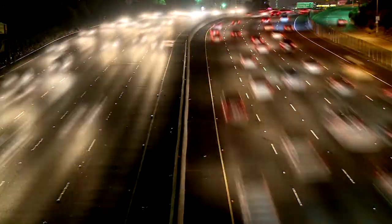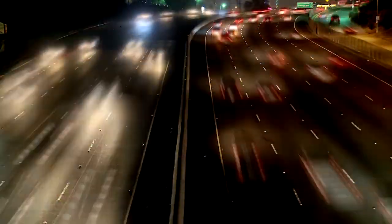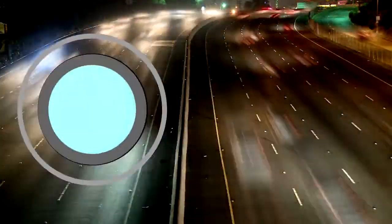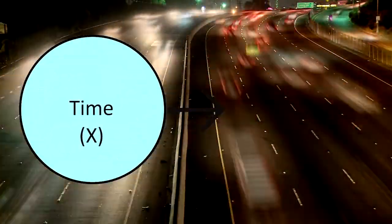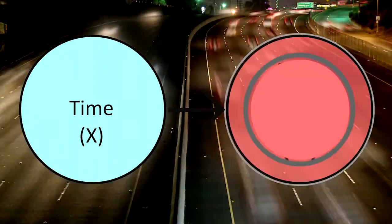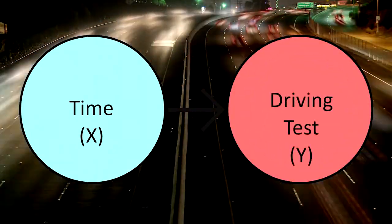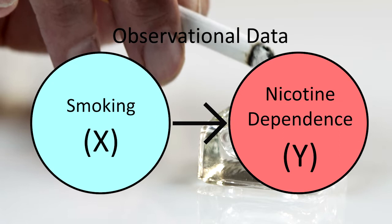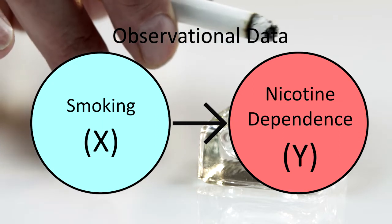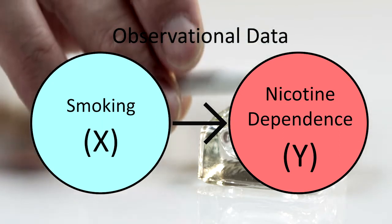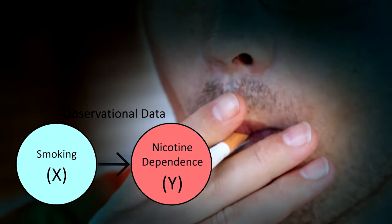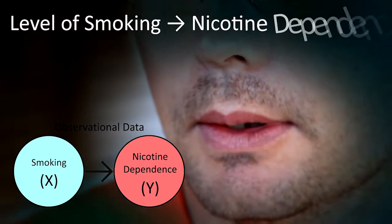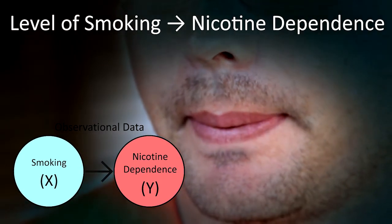If we want to see whether a person's pass-fail outcome on a driving test can be explained by the length of time they practiced driving prior to the test, time would be the explanatory variable and driving test outcome the response variable. For our sample research question, we've decided that smoking will be the explanatory or independent variable and nicotine dependence the response or dependent variable. More specifically, we're interested in the level of smoking at which nicotine dependence is experienced.